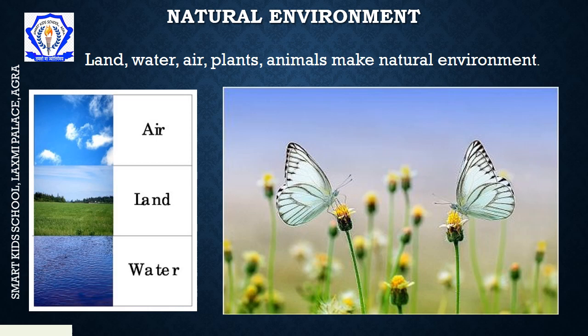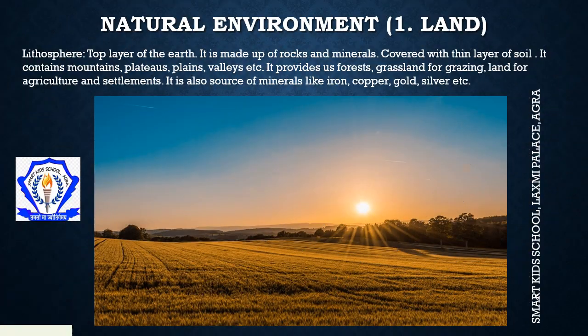The first component of environment is natural environment. It includes land, water, air, plants and animals — everything that is made by nature. The first domain of natural environment is land, called the lithosphere. It is the top layer of the earth, made up of rocks and minerals, covered with a thin layer of soil. It contains mountains, plateaus, plains, valleys, etc. It provides us forests, grassland for grazing, land for agriculture and settlements. It is also a source of minerals like iron, copper, gold, silver, etc.